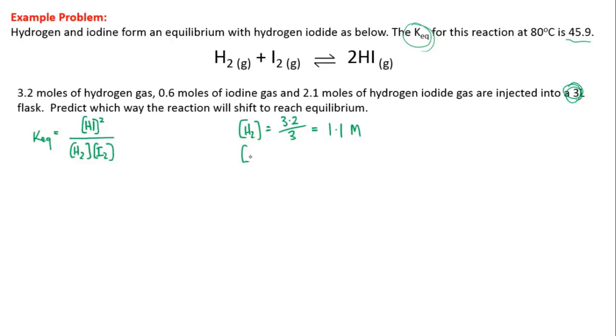Our iodine is 0.6 over 3, so that's 0.2 moles per litre. And our hydrogen iodide is 2.1 over 3, which is 0.7 moles per litre.